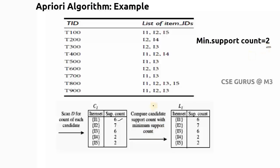The next step is to compare the candidate support count with the minimum support count, which is two. We call C1 also the one frequent item set — one frequent because each entry has only one item. After finding the support count in the one frequent item sets, compare with minimum support count. All items satisfy the minimum support count of two, so all are written as L1. From C1 we get L1, then find C2 from L1, then L2, and so on.